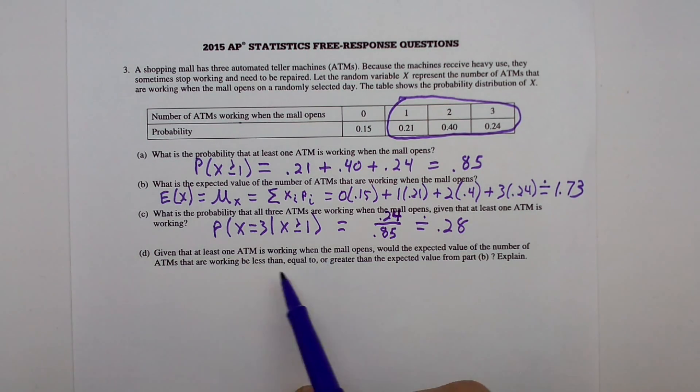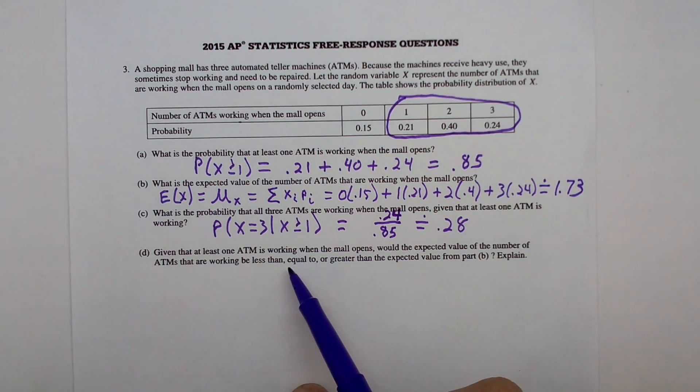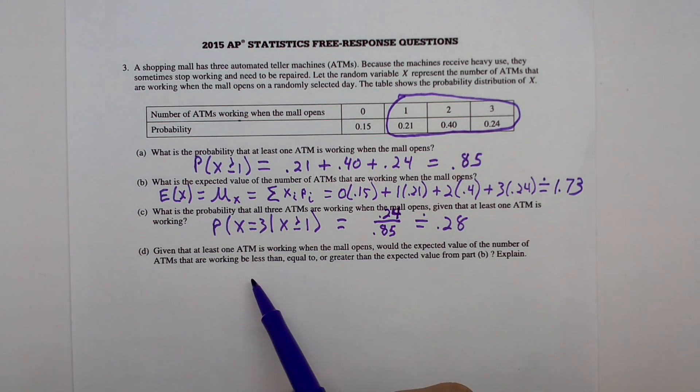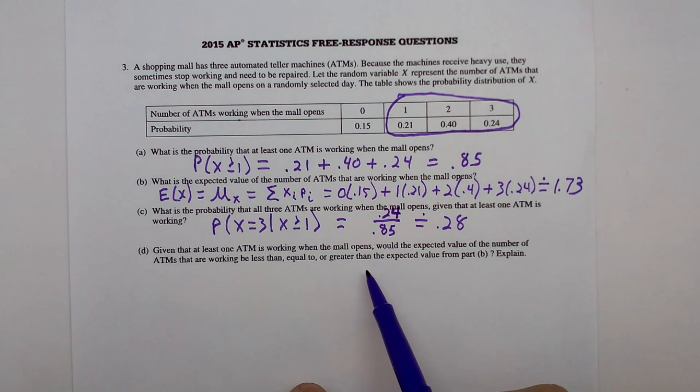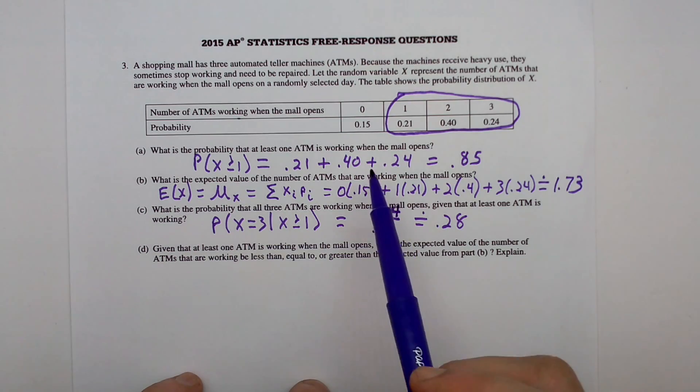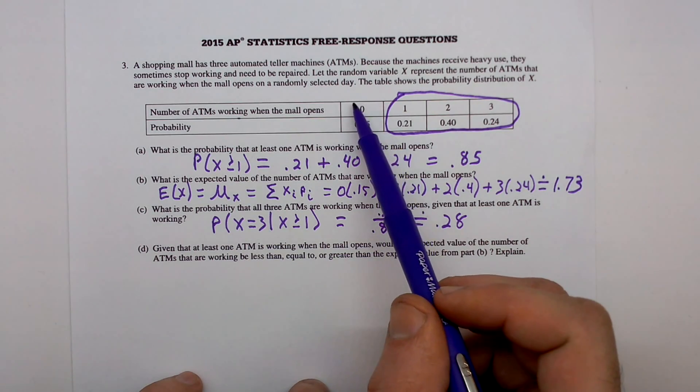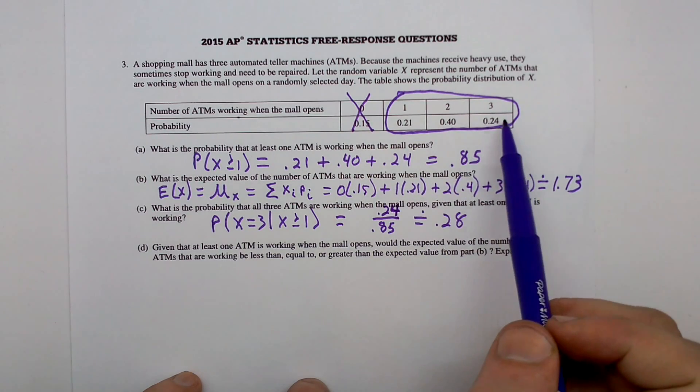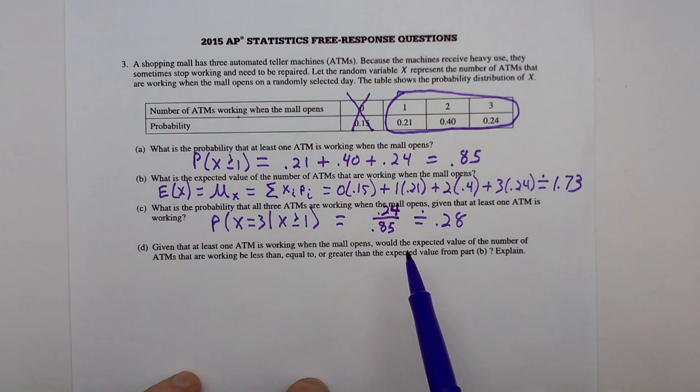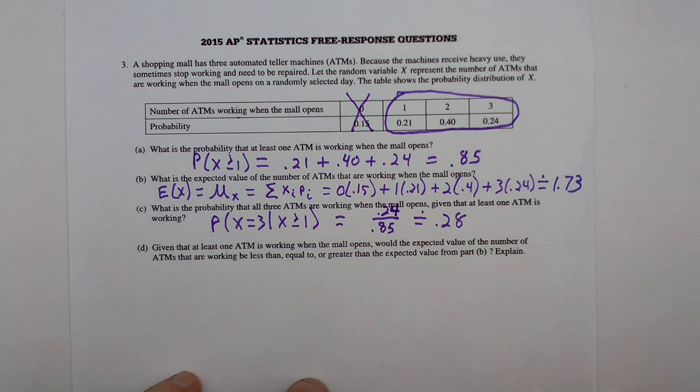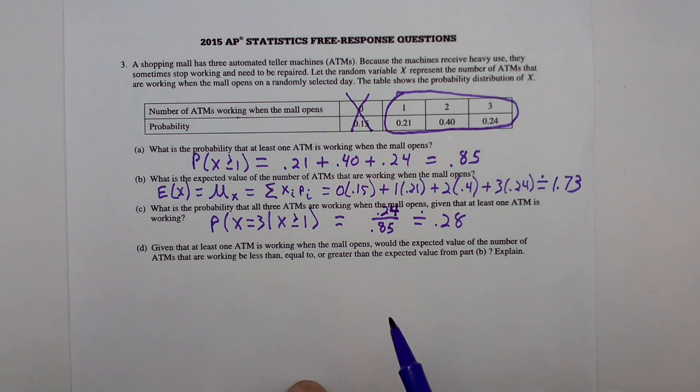Part D. Given that at least one ATM is working when the mall opens, would the expected value of the number of ATMs that are working be less than, equal to, or greater than the expected value from part B? Well, I hope it's obvious to you that if this thing doesn't occur, if we're never going to get zero and we're just going to be here, then it's going to increase. It makes perfect sense that our new expected value would be greater.